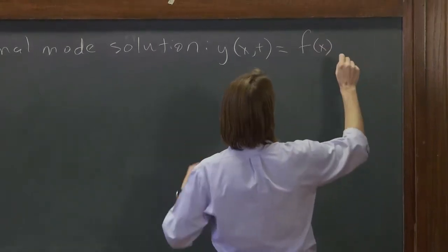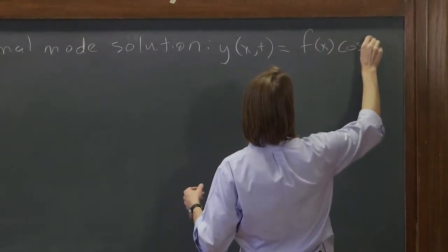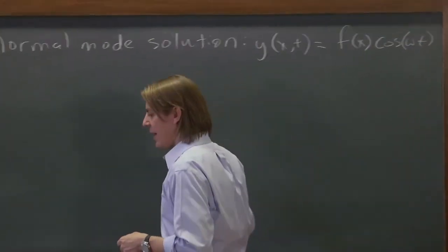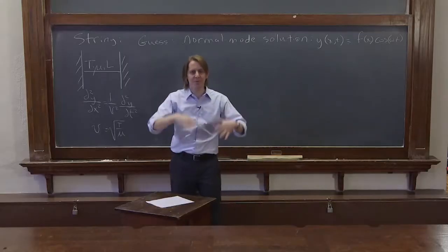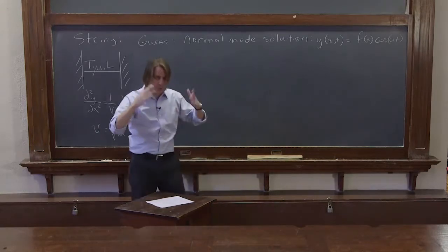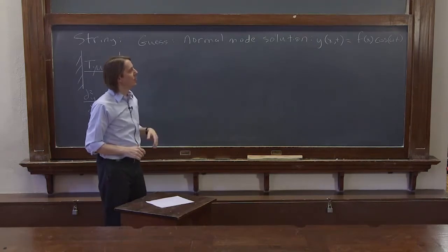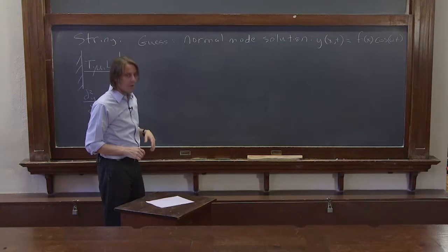So we describe the shape as f of x and multiply it by cosine omega t. And that has to be a normal mode. Whatever shape you have, everything has to be moving up and down together at the same frequency omega. So that's our first guess: y(x,t) equals f(x) cosine omega t.